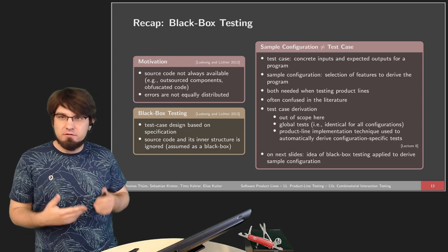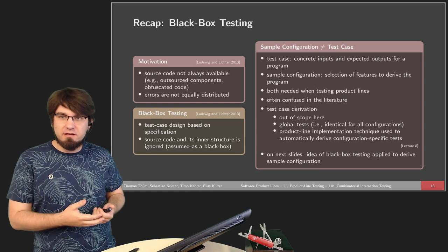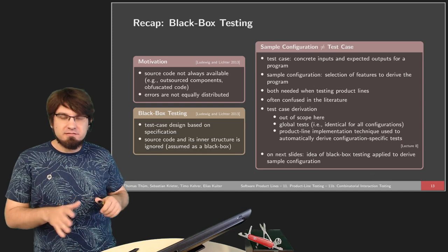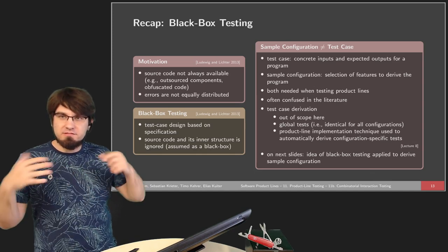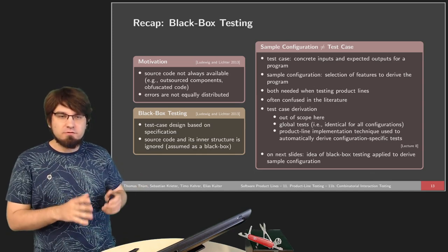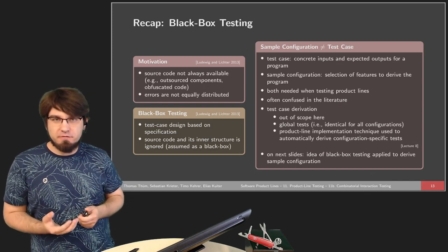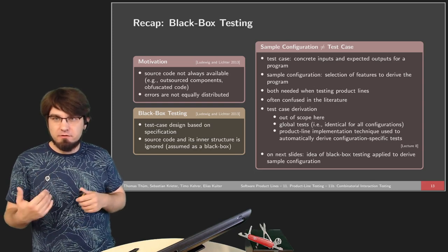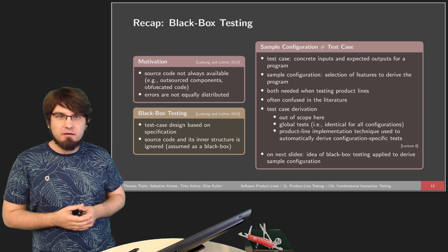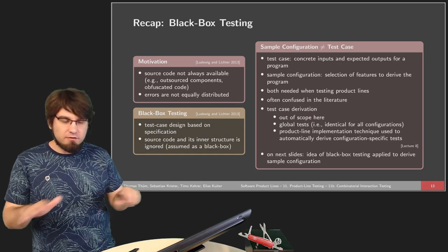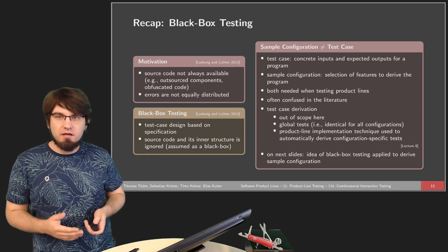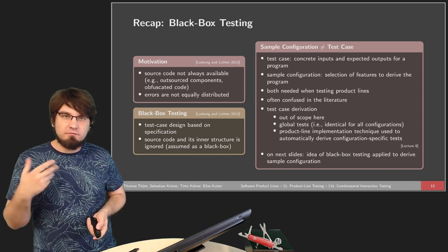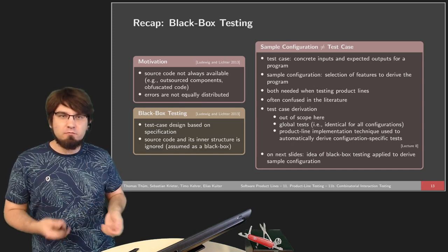The actual derivation of test cases — how to design a test case and what are reasonable test cases for specific configurations — is out of scope here. We want to look at the whole system as a black box and focus on how we can derive these sample configurations. Many ideas from the black box testing approach also apply here, since we totally ignore implementation artifacts and derive sample configurations based on the features and the feature model.